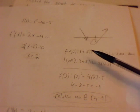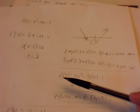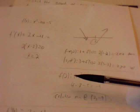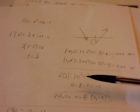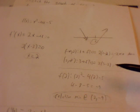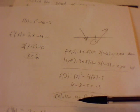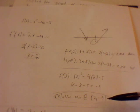Since the function goes from decreasing to increasing, we're looking for a relative minimum. To find it, we plug x = 2 into the original equation: f(2) = 2² - 4(2) - 5, which gives negative 9. So we have a relative minimum at (2, -9).